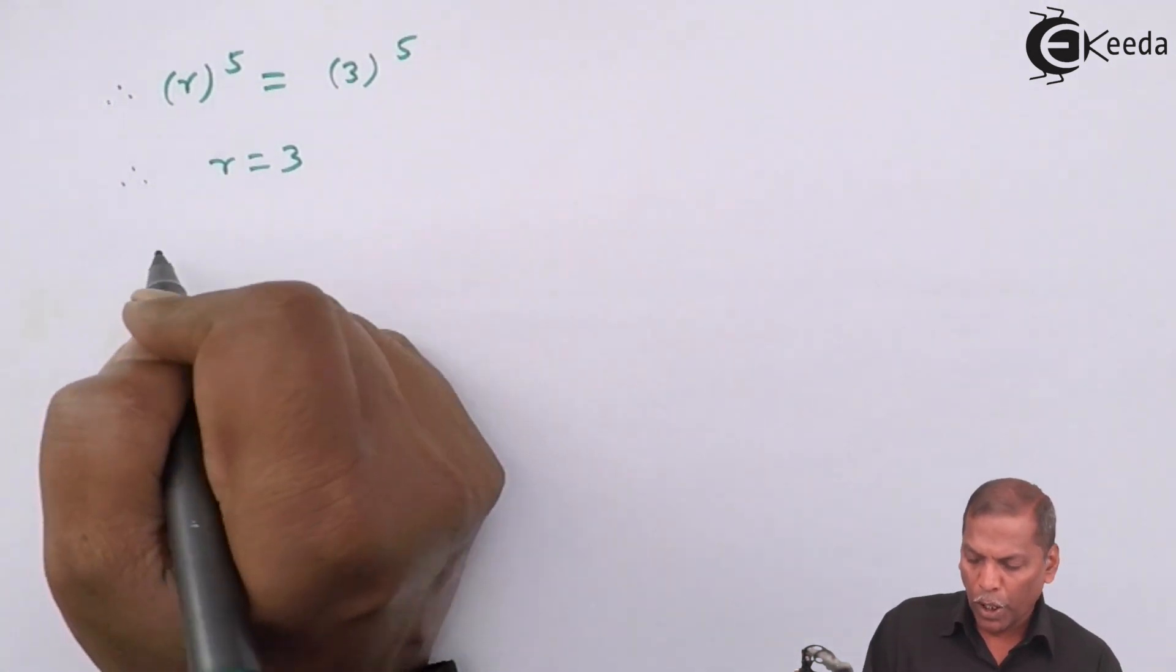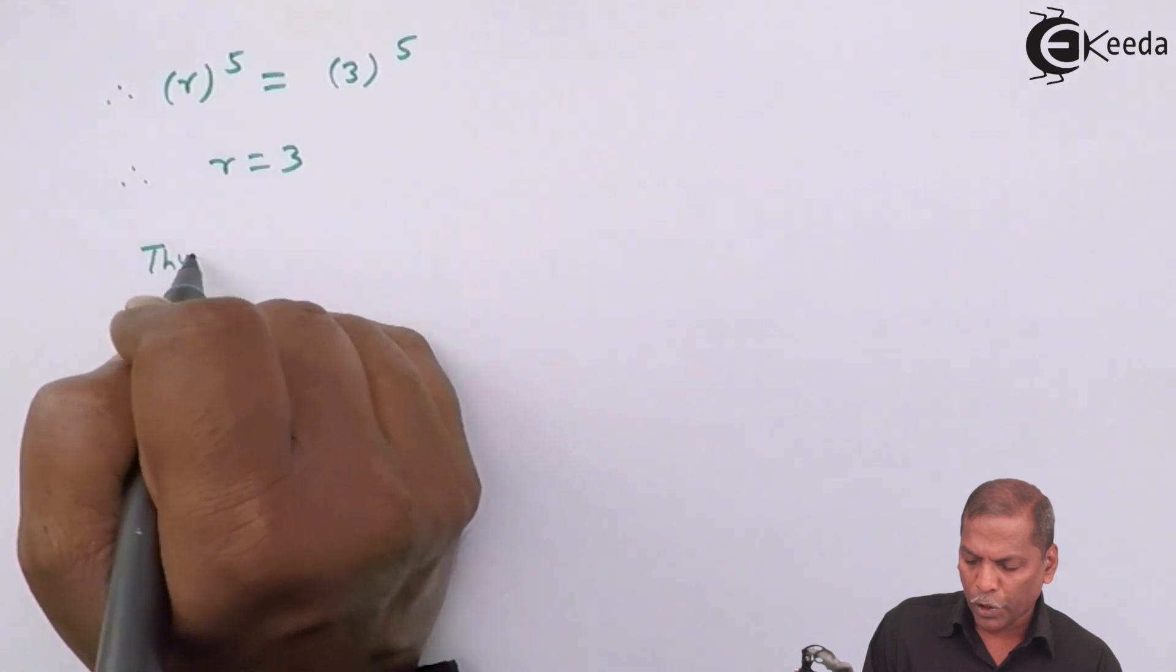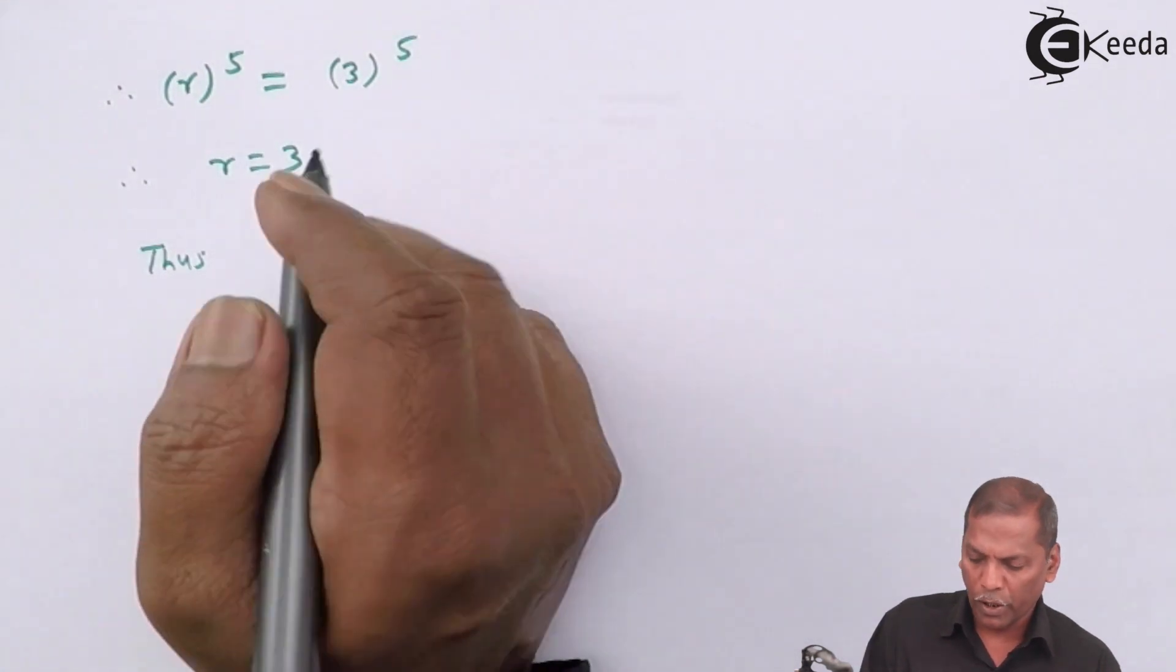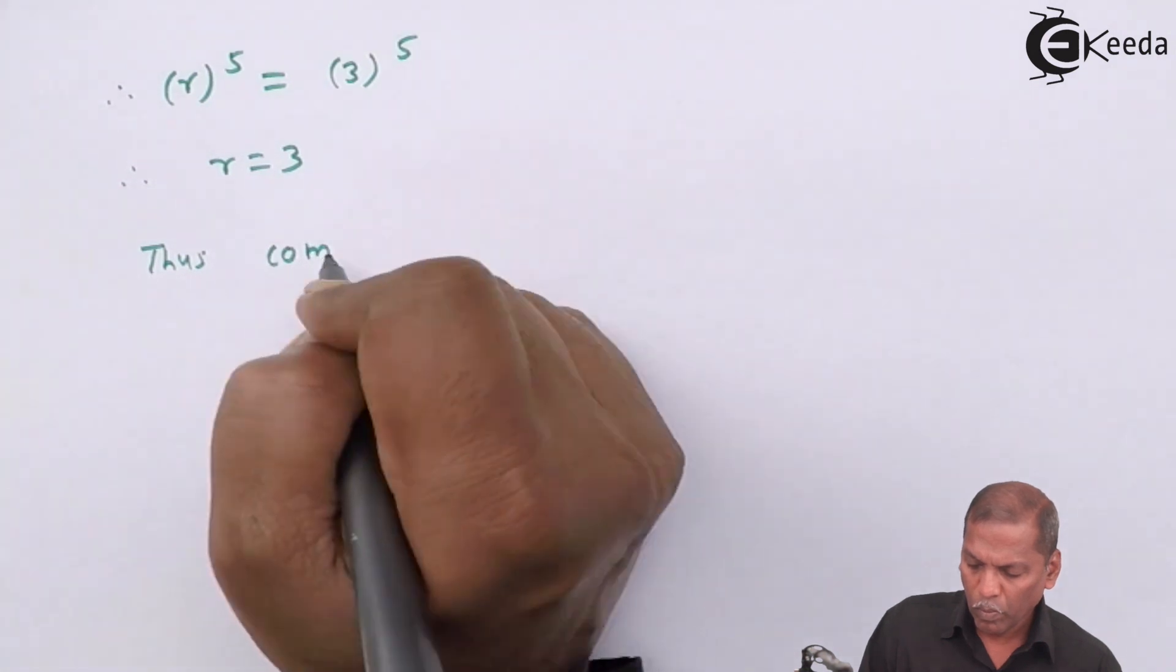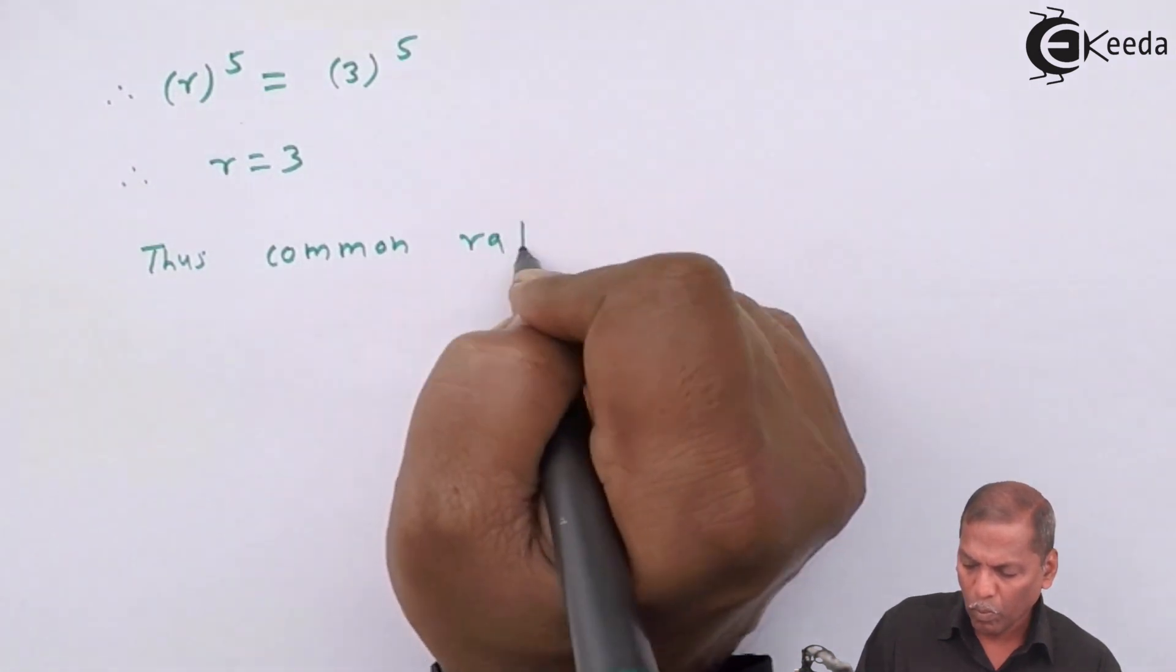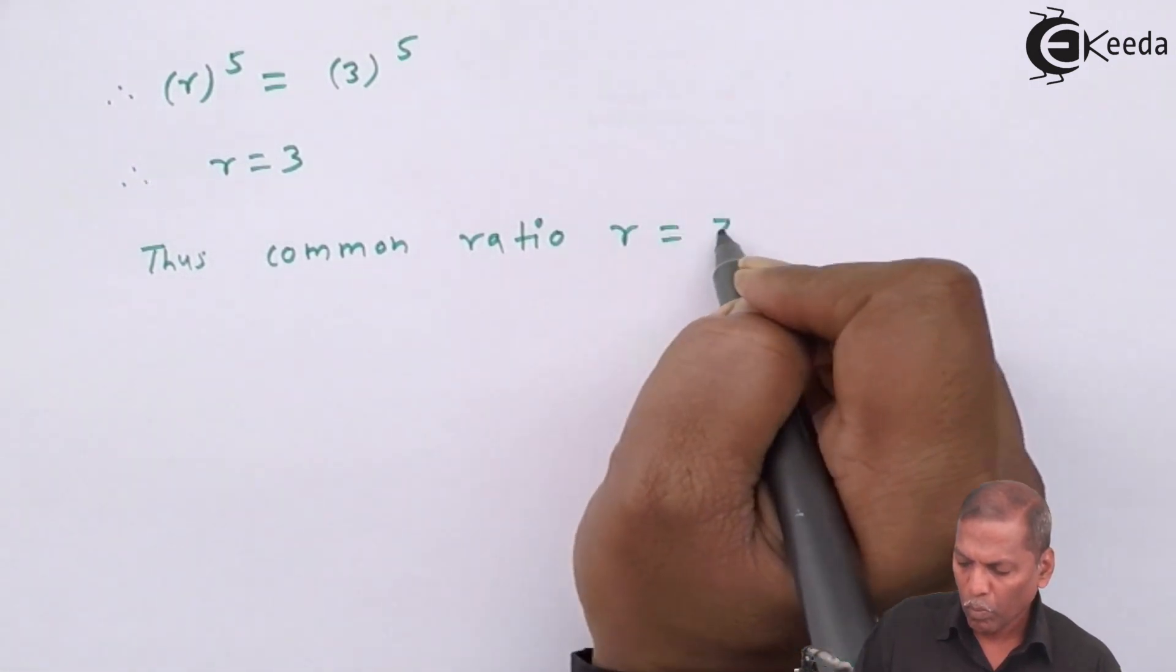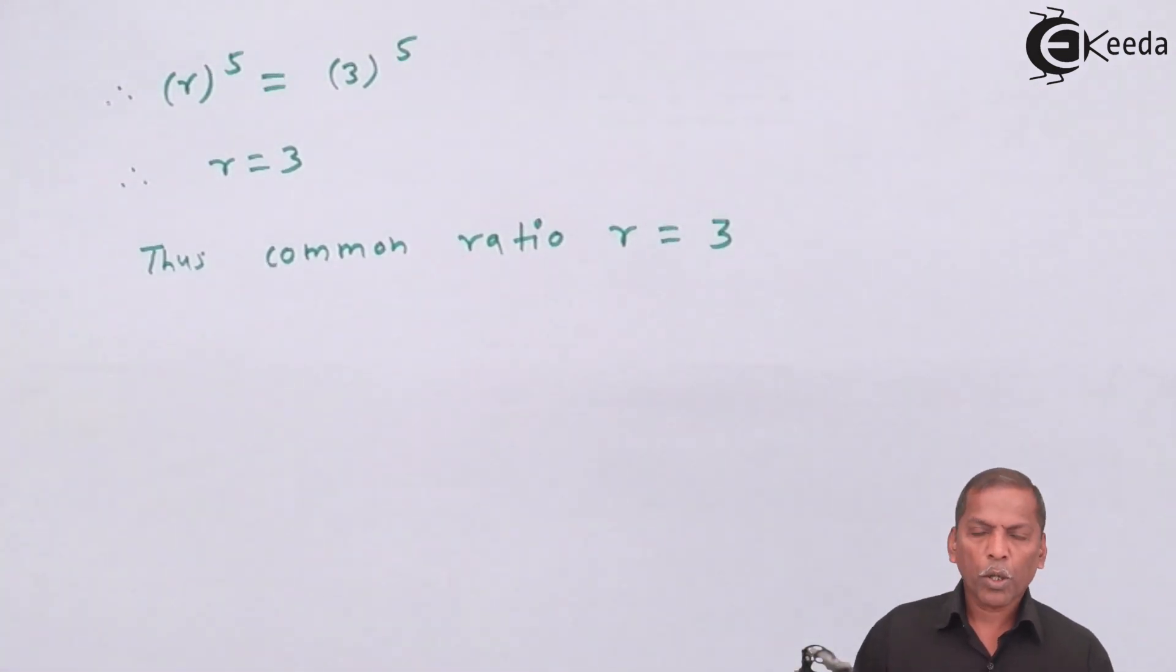So in this way, the common ratio R equals 3. This is the required solution for the given problem. Thank you.